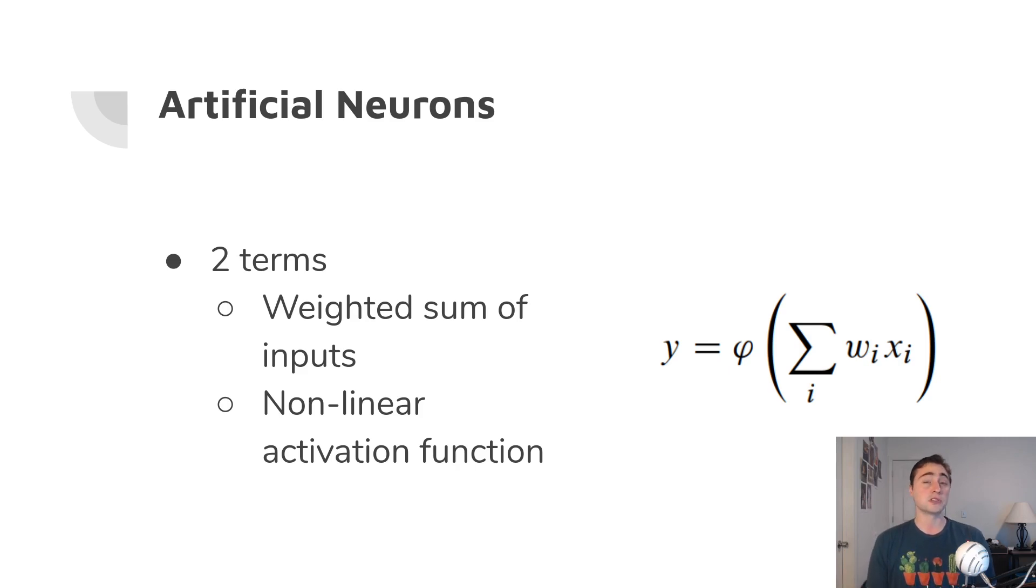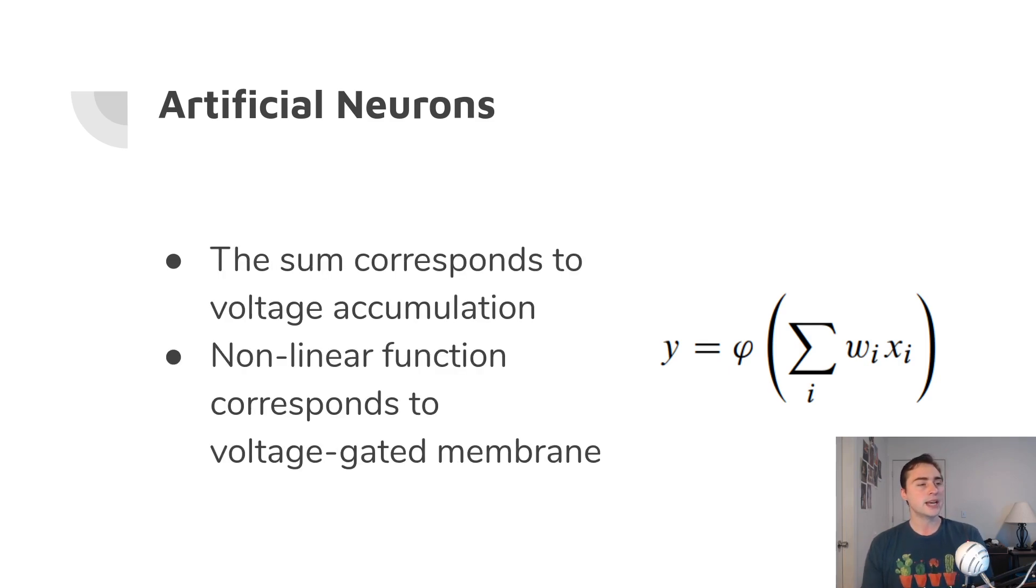When we're talking about these artificial neurons or these perceptrons, one of the common mathematical ways we can describe them is by this simple sum and a nonlinear activation function. There's two terms here: it's a sum of weighted inputs, so some weights w and some inputs x, and then some activation function. We can tie this back somewhat. Like we said earlier, they're inspired by biological neurons. The sum corresponds to the voltage accumulation that occurs in a biological neuron, and the nonlinear activation function can correspond to this voltage-gated membrane in a rough sense. It's taking some inspiration, but it's clearly different than trying to faithfully represent these biological neurons.